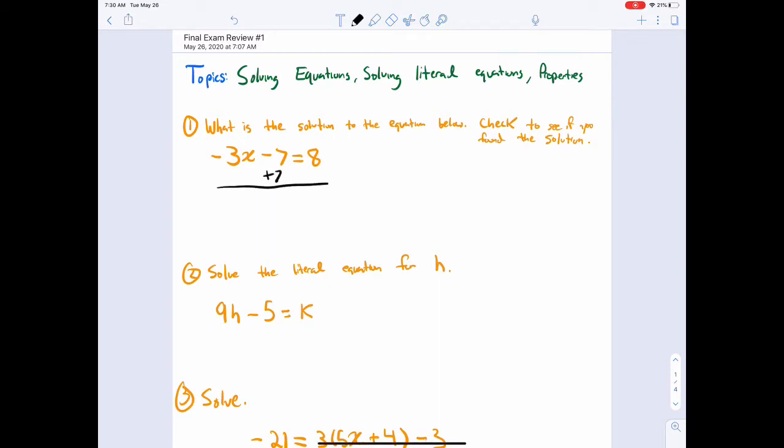But you should get, if you add seven to both sides here, you get 15 equals negative 3x. Divided by negative 3, x equals negative 5.